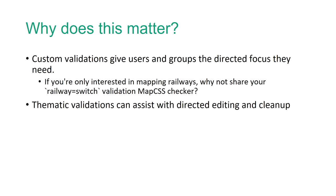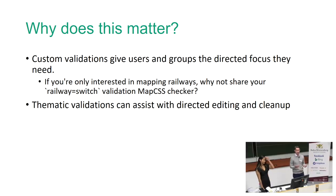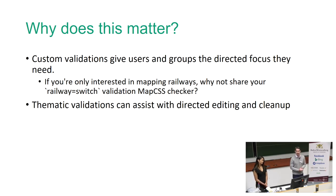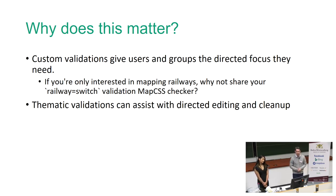So why does all of this matter? We have a responsibility to new mappers to give them all the tools necessary to create quality data. By creating custom validations, individual users and teams or groups can have the directed focus that they need. For example, if you're interested in mapping railways, why not share your validation written in MapCSS so you can identify where there should be a railway equals switch — where two railways intersect and a train can go a different direction? There are a lot of them that aren't mapped. Thematic validations could also assist with directed or organized editing and cleanup.